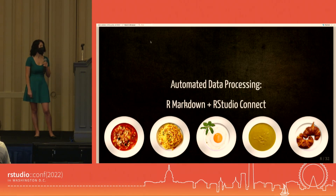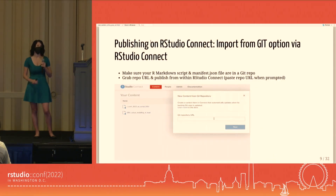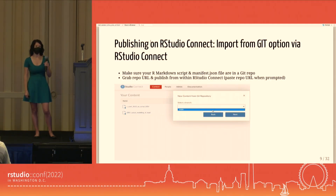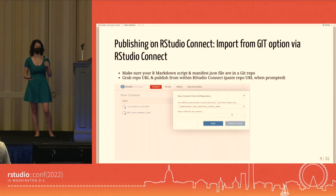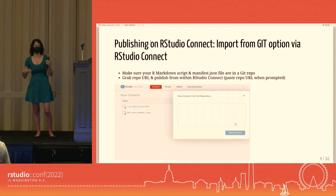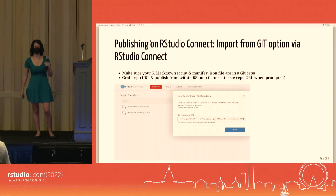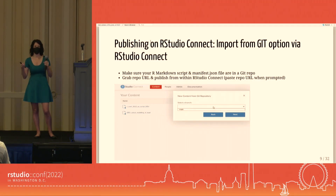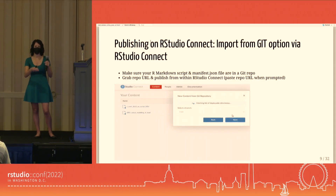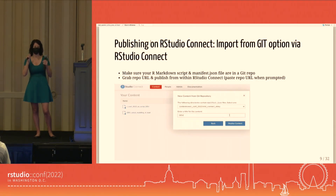The way we automated our data processing was through a combination of R Markdown and R Studio Connect. We chose the import from Git option available on R Studio Connect. Since we already store code in Git repositories, we just needed to ensure we had a manifest.json file, grab the Git URL, go to R Studio Connect, click publish, paste that URL, and deploy our content — and we had our automated scripts.